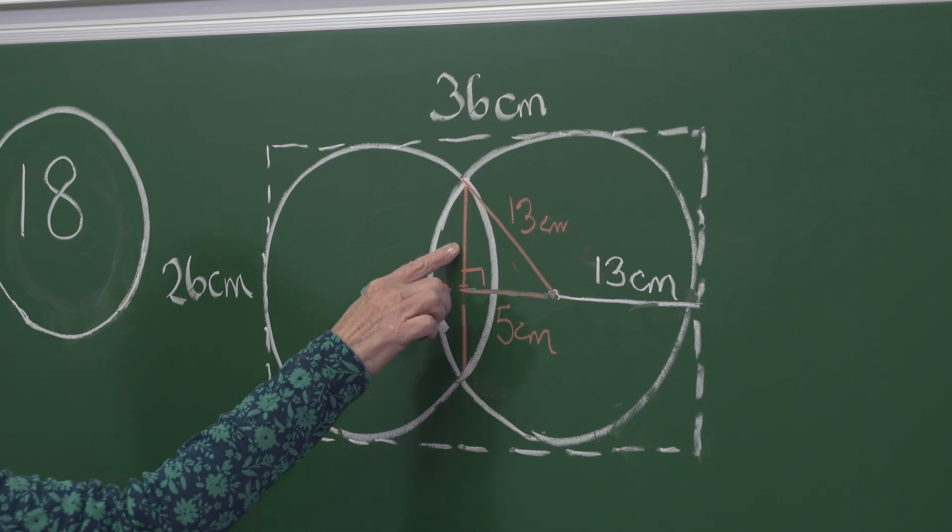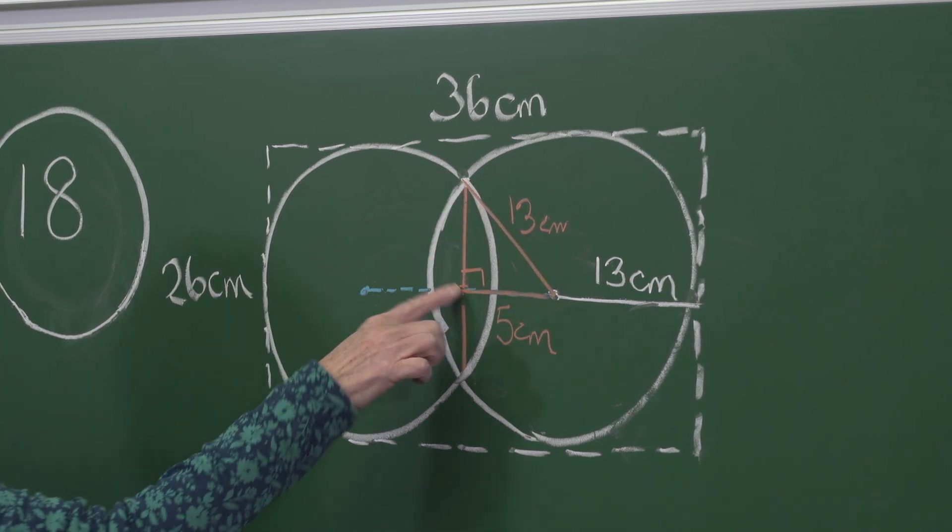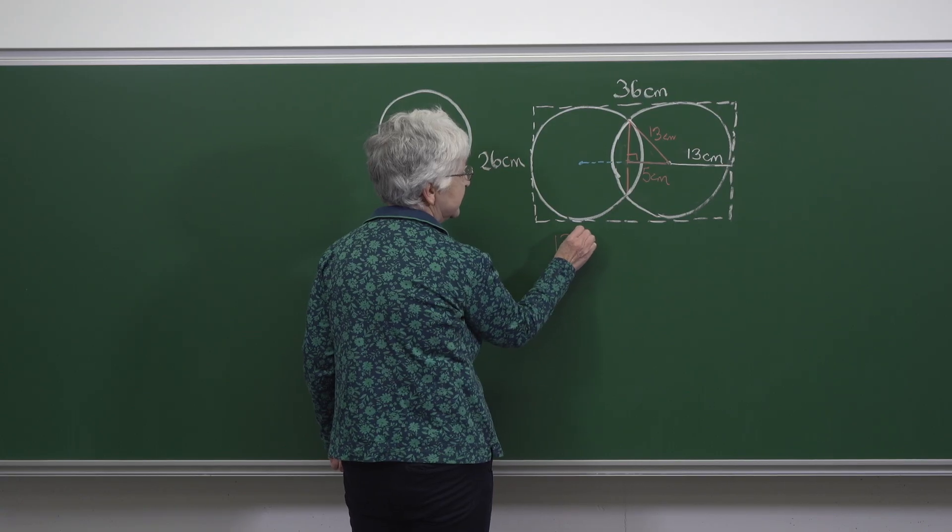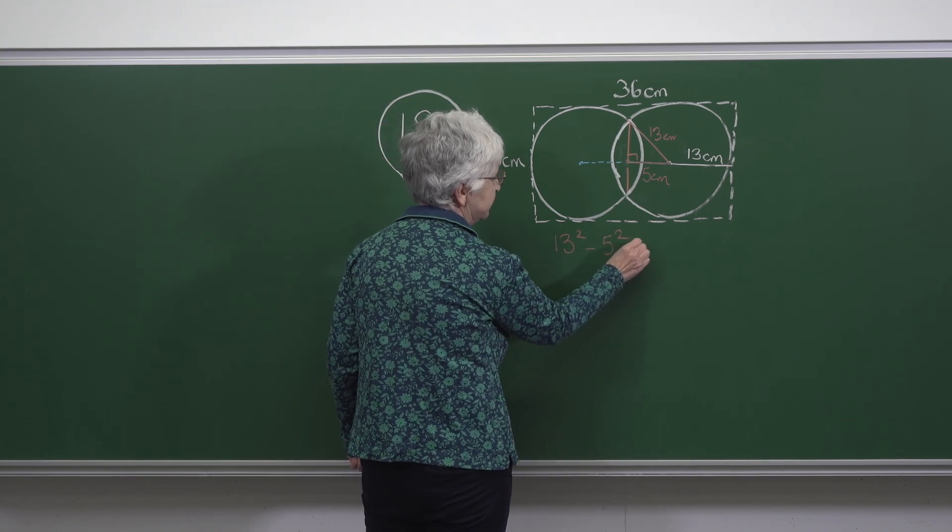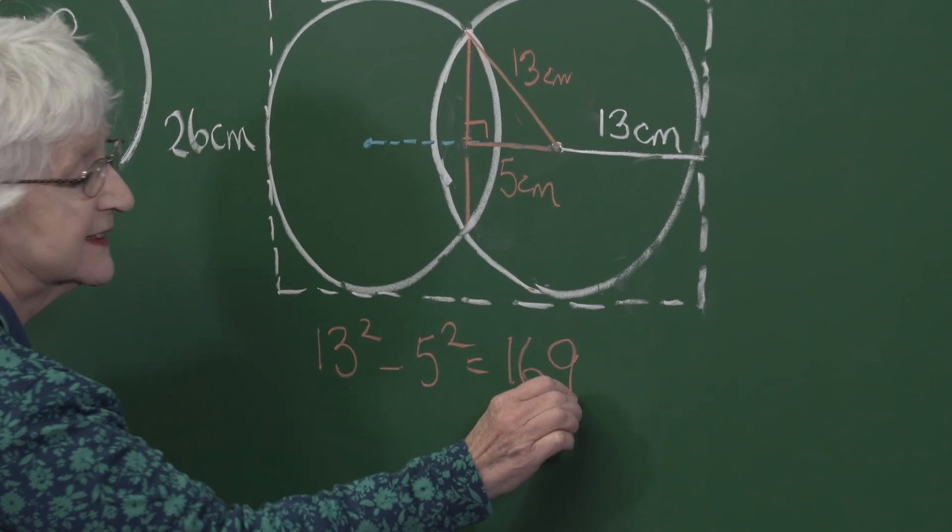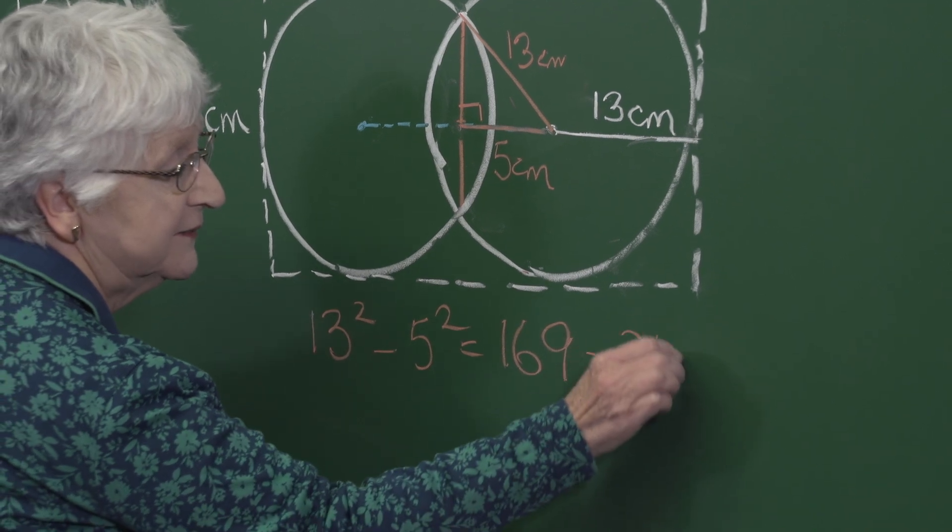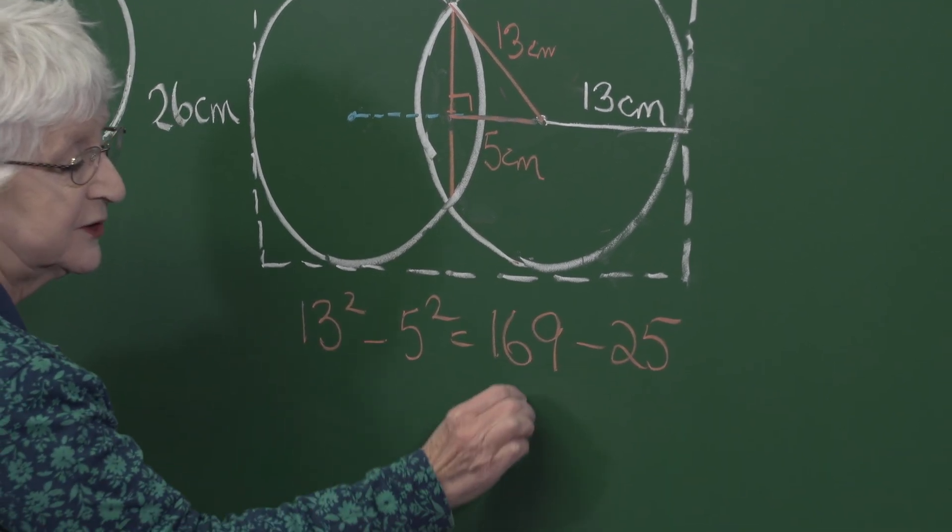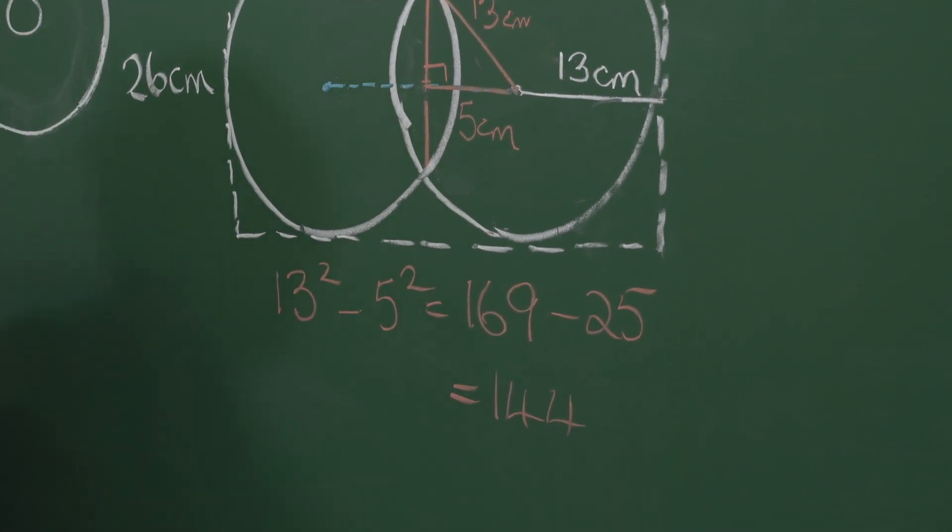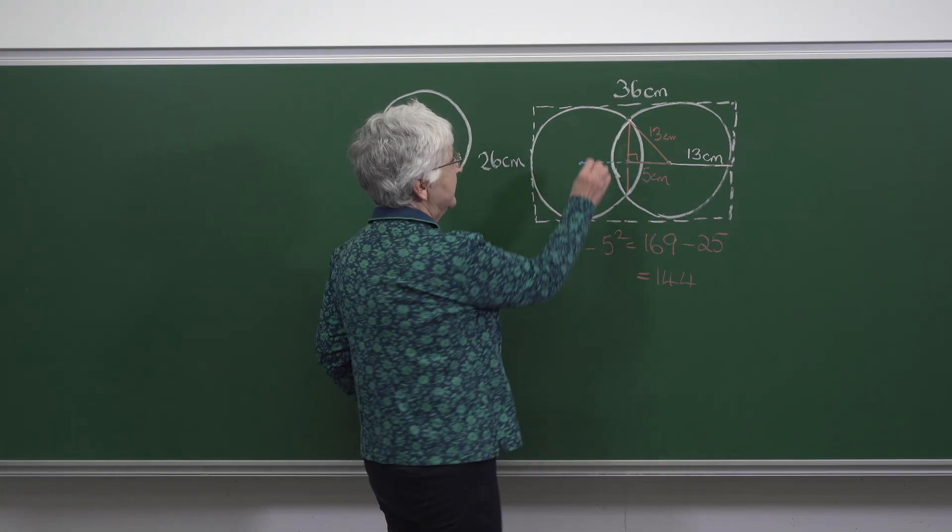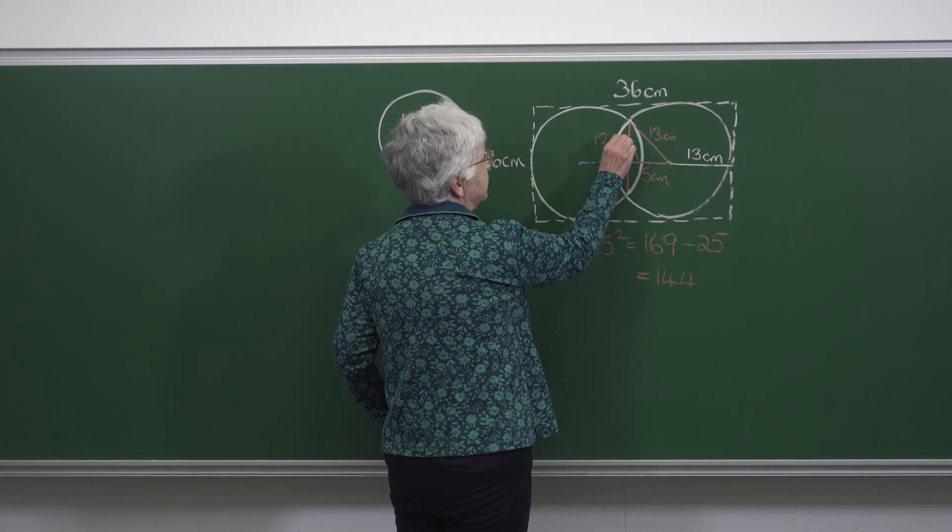we have the length of this line segment squared is 13 squared minus 5 squared, which is 169 minus 25, which is 144. So this line segment is of length 12 centimeters.